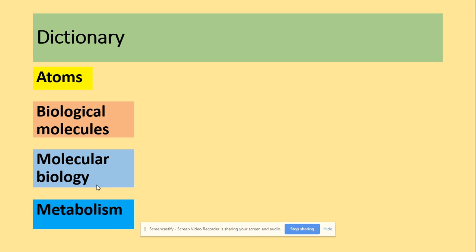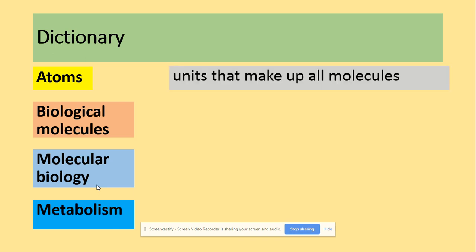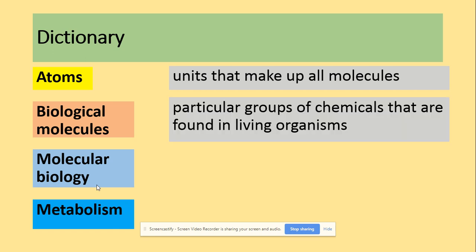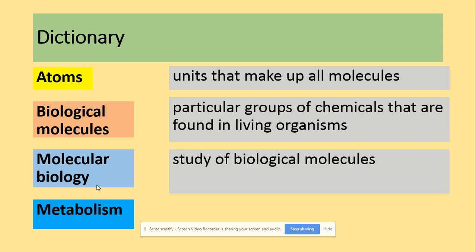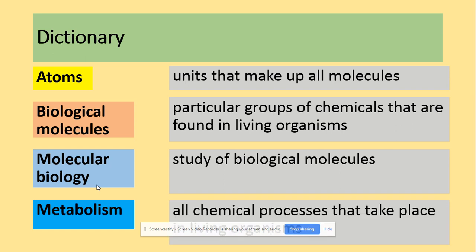Let's look at some key words. Atoms make up all molecules, including biological molecules, which are particular groups of chemicals found in living organisms. Molecular biology is the study of biological molecules, and metabolism refers to all chemical processes that take place in living organisms.